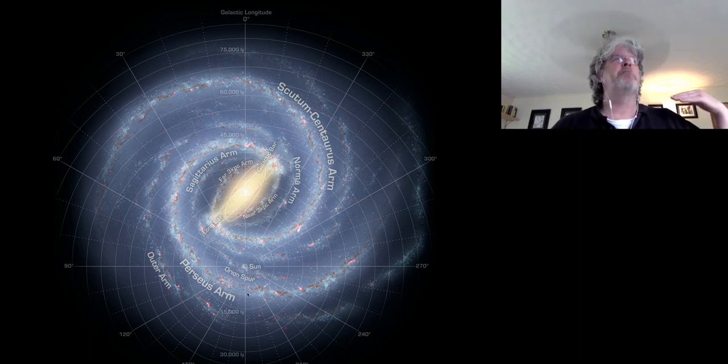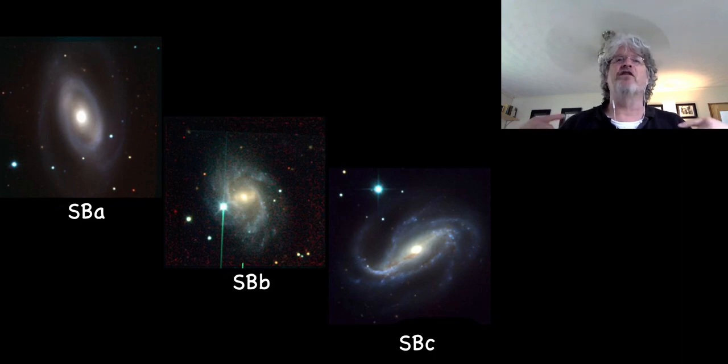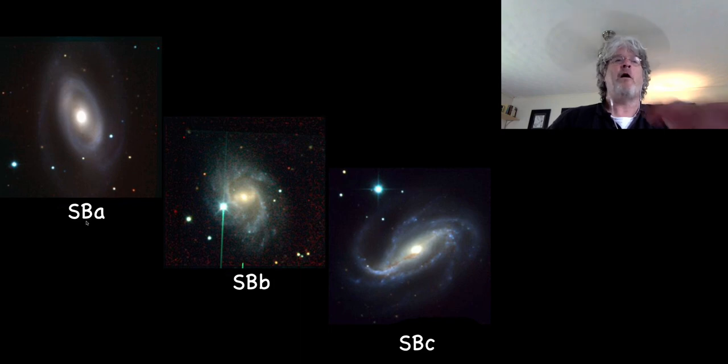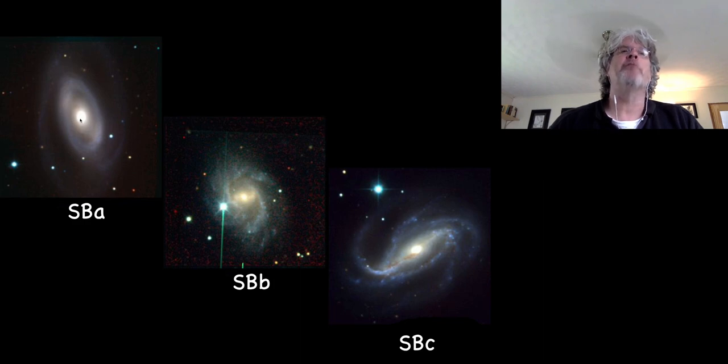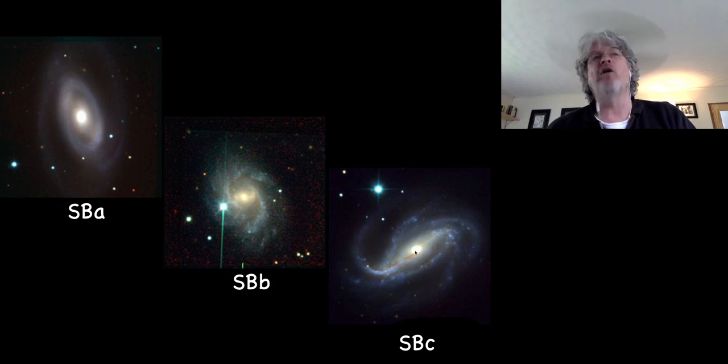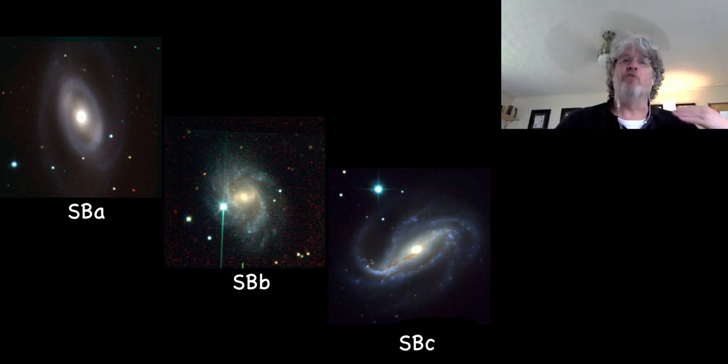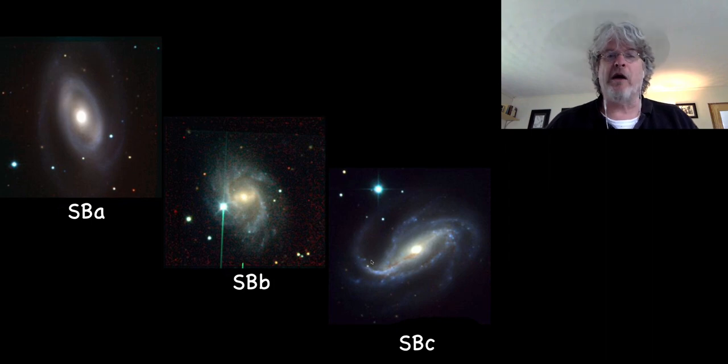Barred spirals are classified just like regular spirals, where there's an S, and then there's a capital B for barred, but then there's an A, B, or C. For the type A barred spirals, the nucleus is fairly big and prominent, the spiral arms very tightly wound. At the other extreme, a relatively small nucleus compared to the size of the disk, and much looser arms.